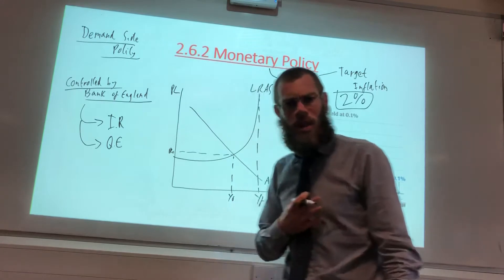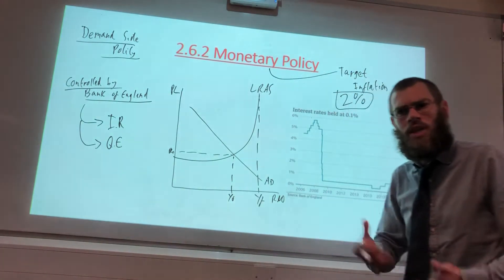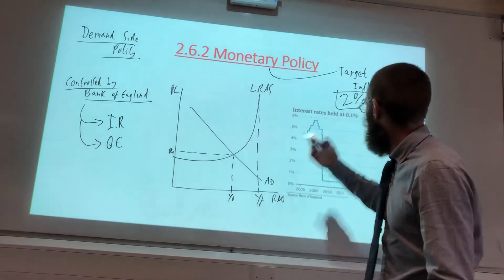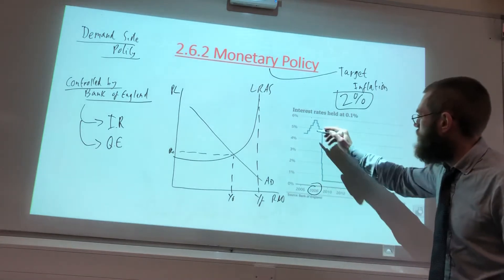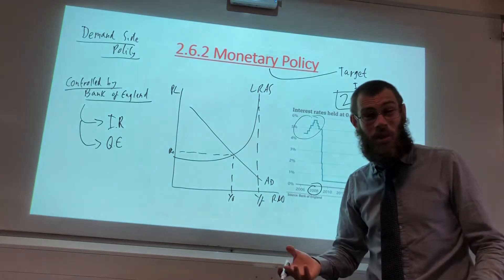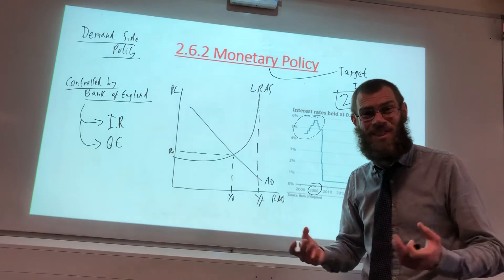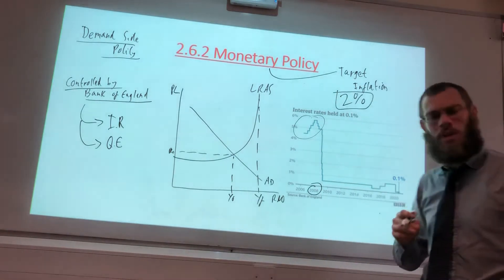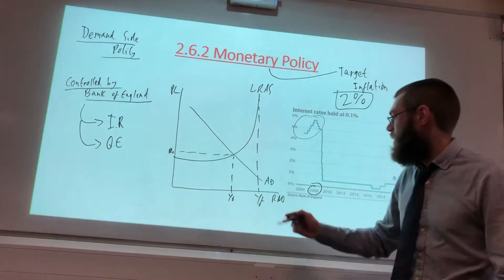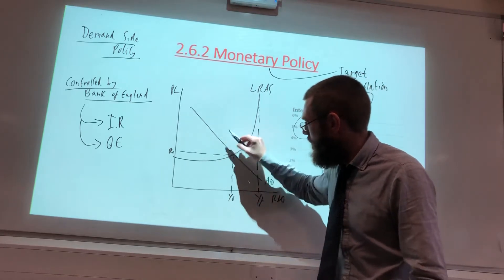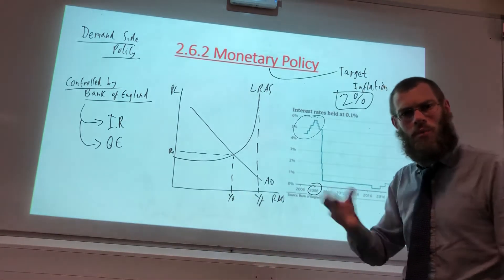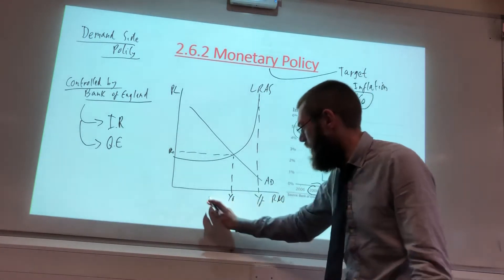Where are interest rates today, and what might the Bank of England need to do to get us spending? Pre-2008, interest rates were around four to six percent — worth bearing in mind that back in the 1980s they were as high as 17 percent. Once the global financial crisis hit, the Bank of England had to act: aggregate demand was falling, inflation was falling — we nearly got deflation — and we had really high unemployment.